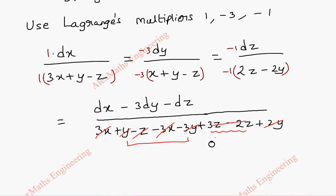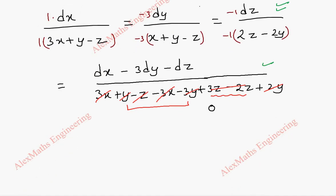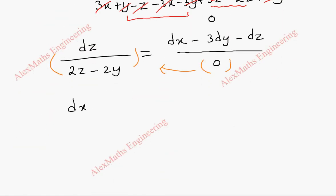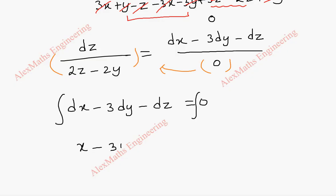Since the entire denominator is 0, taking this term without the multiplier: dz by 2z minus 2y equals dx minus 3dy minus dz divided by 0. When we cross multiply, this entire term is multiplied with 0, so the remaining terms give dx minus 3dy minus dz equal to 0. Integrating both sides: x minus 3y minus z equal to c1. This is named as a.